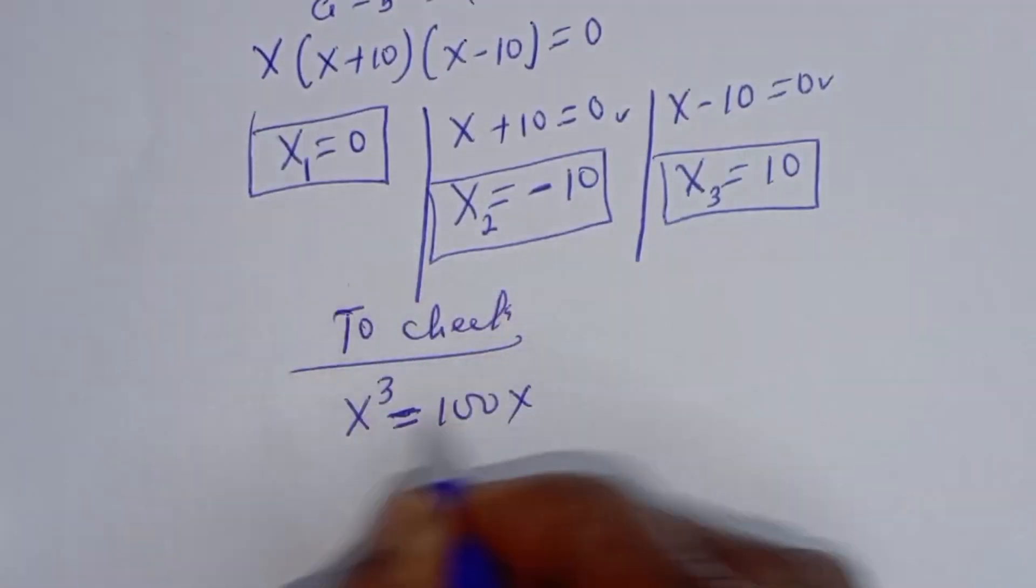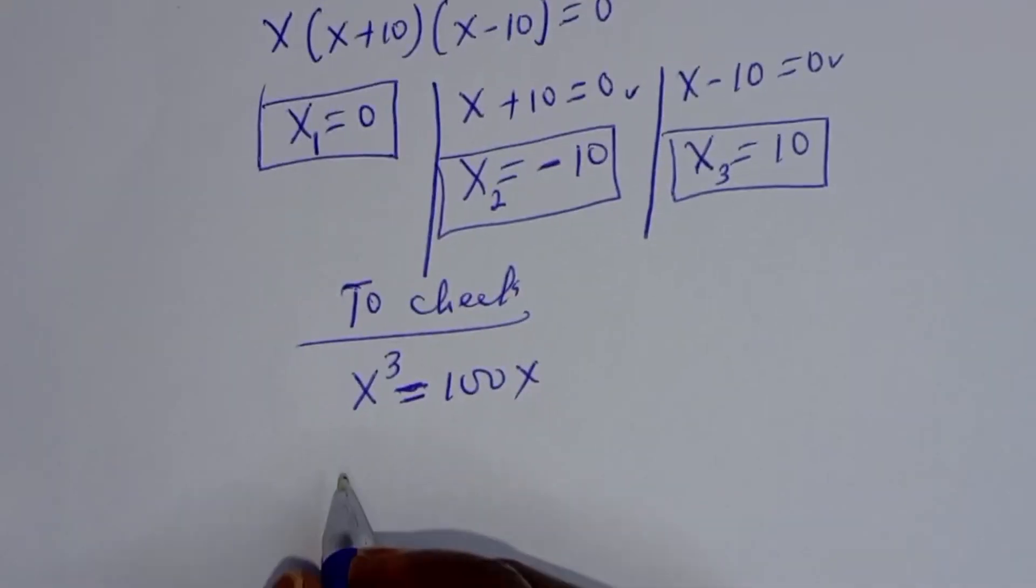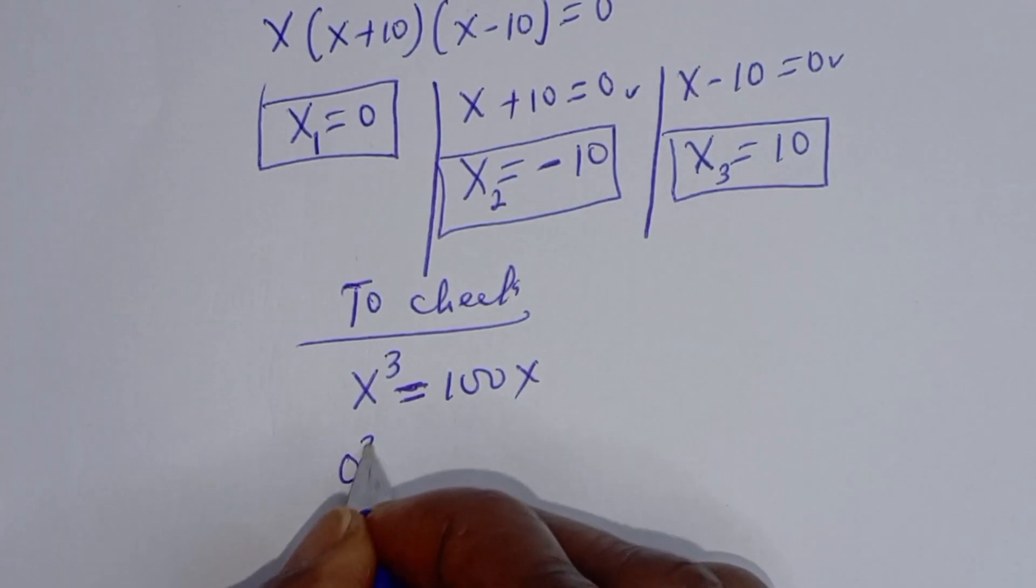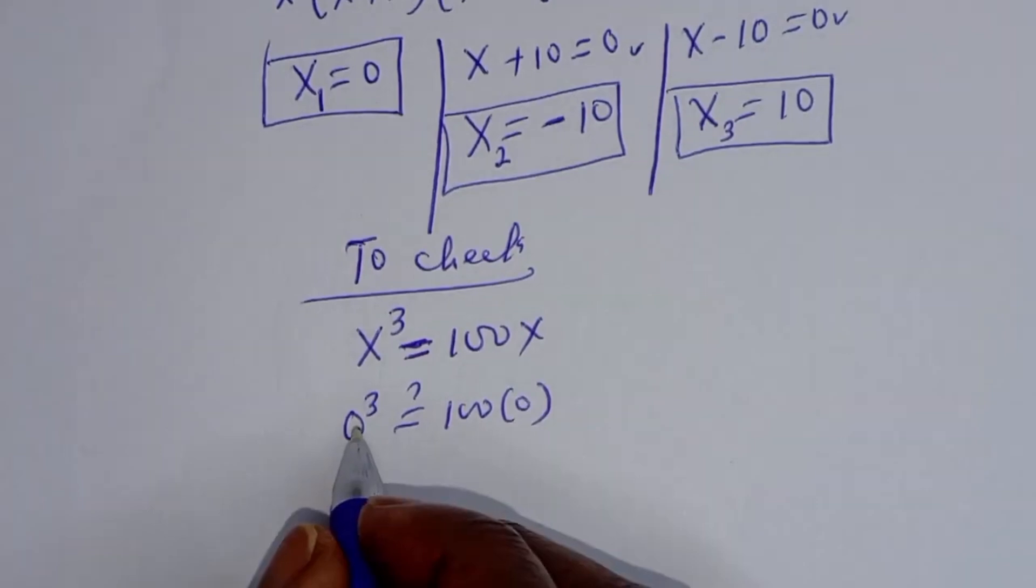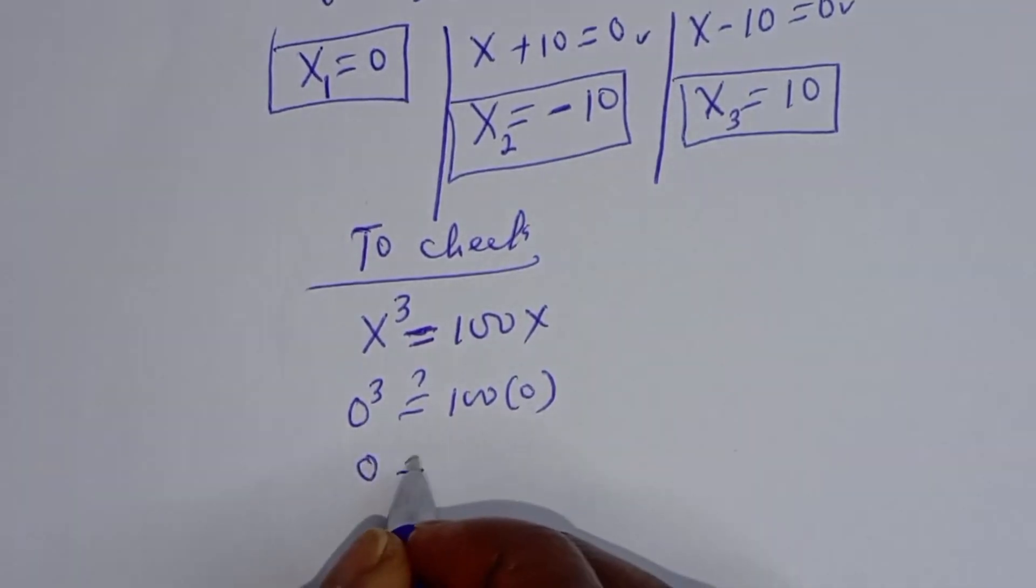To confirm when x equals 0: 0 raised to power 3 must equal 100 bracket 0. Then 0 raised to power 3 is 0, which equals 100 times 0, which is 0. This is true.